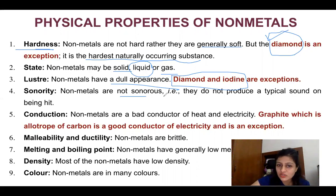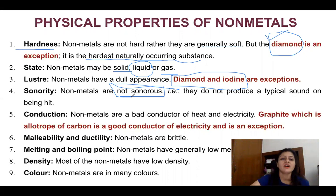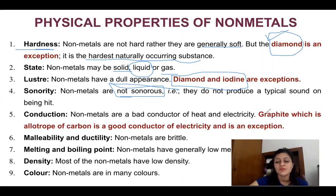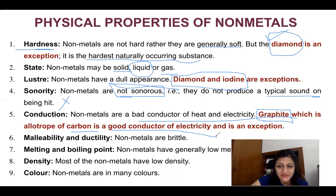Non-metals are not sonorous. We studied that metals produce a ringing sound — that is sonorous — so non-metals are not sonorous. They are bad conductors of heat and electricity, but there is always an exception: graphite, which is an allotrope of carbon, is a good conductor of electricity. So this is an exception — always remember exceptions.